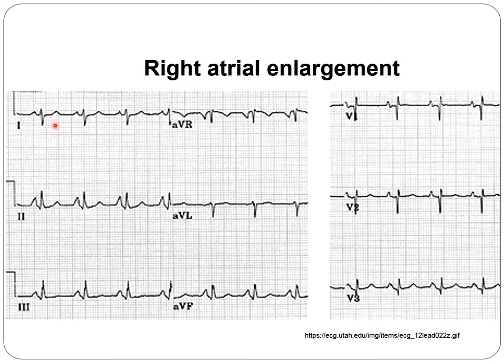We have P waves regularly coming, every P followed by QRS. The PR interval is normal. However, looking at the morphology, the P wave in lead II is large and tall with a normal base. Looking at V1, the initial phase is bigger and the amplitude is bigger than one millimeter, suggesting right atrial enlargement — what is called P pulmonale. The QRS is narrow, the axis is right deviated at around 100 degrees or so, which can represent extreme right deviation.